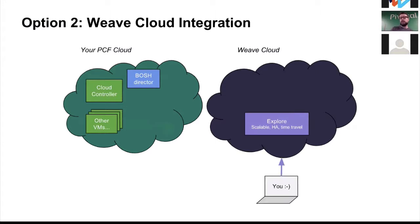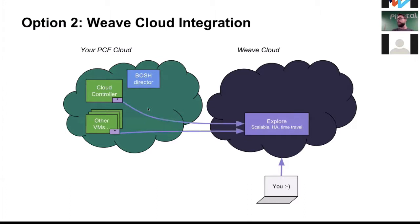The idea is you log into your Weave Cloud account and see your PCF deployment there. The tile co-locates agents onto all VMs, but instead of deploying a Scope app in the green cloud, it configures agents to send reports straight to Weave Cloud using a service token. At that point you can see your CF deployment in Weave Cloud, which runs somewhere completely different.